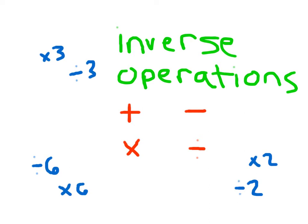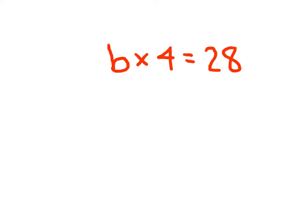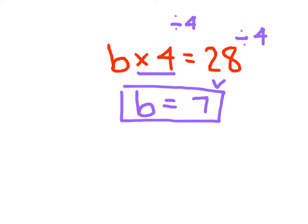Inverse operations. Let's use an inverse operation to help us solve this multiplication equation: b times 4 equals 28. We have b times 4, and we're going to get rid of that times 4 by dividing by 4 on both sides of the equation. b times 4 divided by 4 just leaves us with b, and 28 divided by 4 is 7, so b equals 7 is our solution.